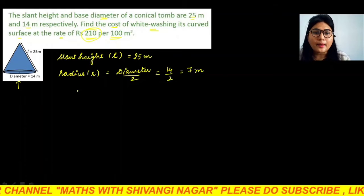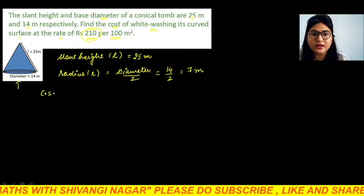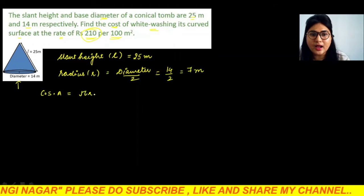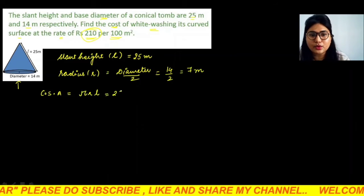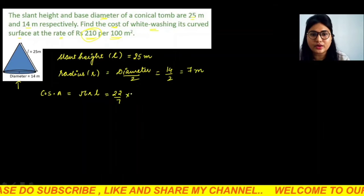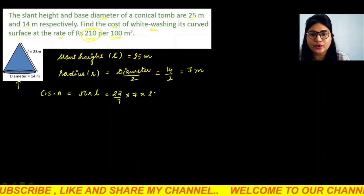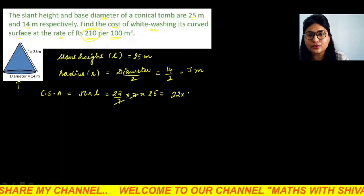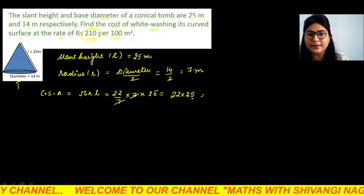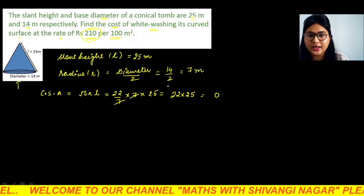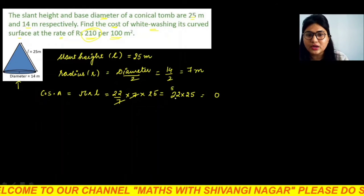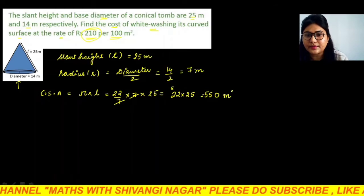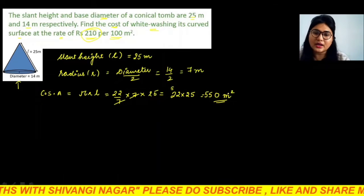Ab hum sab se pehle iska kya find karenge? Curved surface area find karenge. So curved surface area is what? Pi R L. Pi ke baare mein kuch nahi bola to 22 upon 7 put karo. Radius is 7 and length is 25. 7 se 7 cancel hua. So 22 into 25, multiply karenge: 25 times 2 is 50, carry over 5, 25 times 2 is 50 and 55. So yeh aaya 550 meter square, aapka curved surface area. Clear?